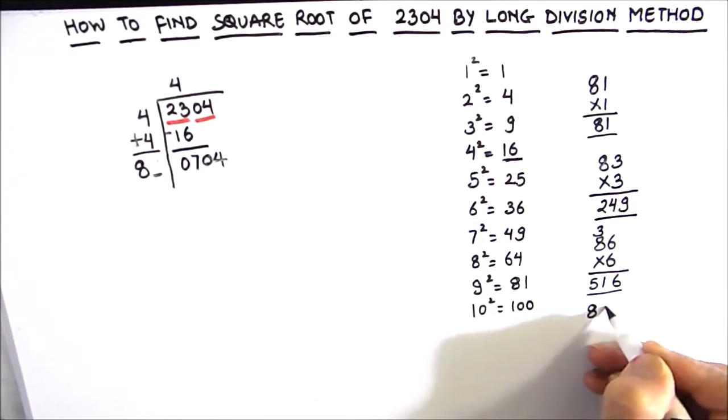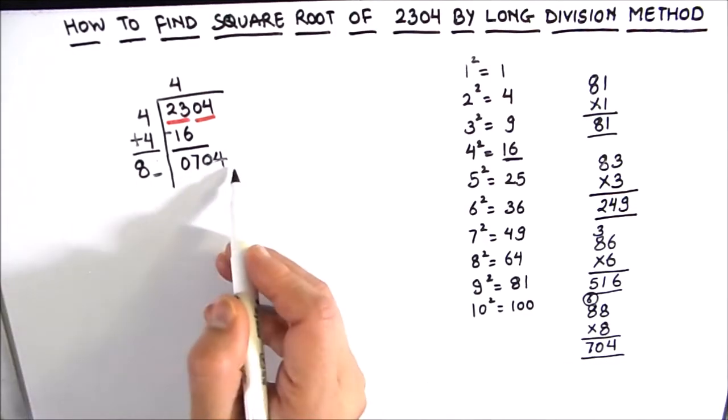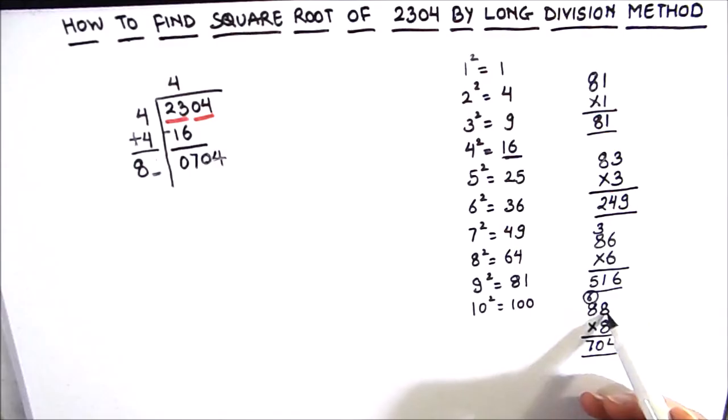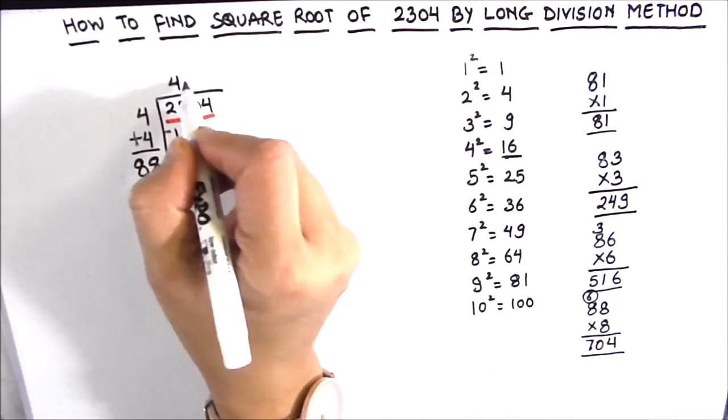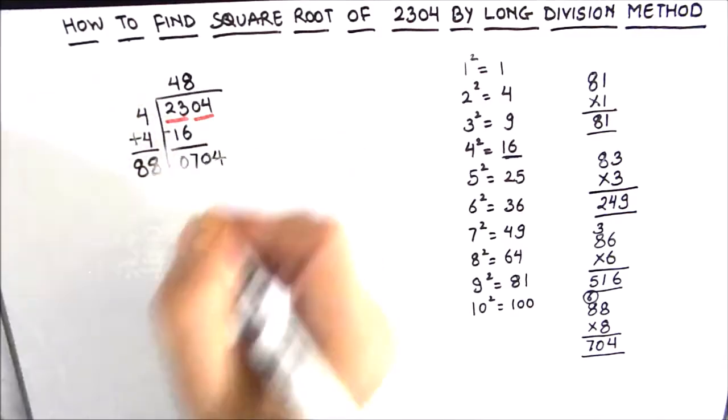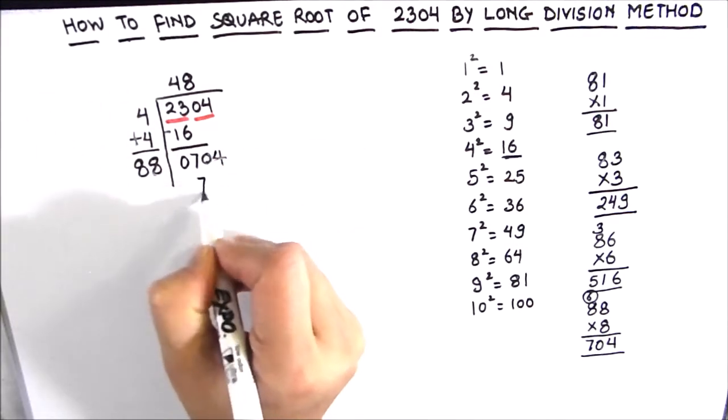Now let us choose 8. So 88 times 8 will be 8 times 8 is 64. So we got our exact number 704. So the digit we are going to annex is 8. So 8 will come here and 8 will go in the quotient too. So 88 times 8 will give us 704.